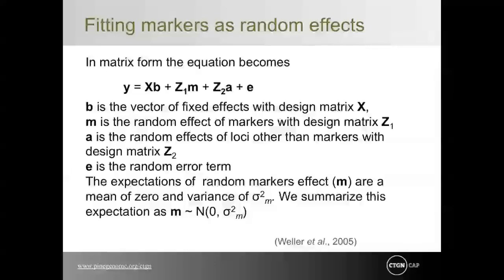We may want to fit markers as random effects. In a mixed model, we can shrink the estimate of marker effects according to the amount of data available. The less data there is to estimate M, the more the estimate will shrink towards the mean. Fitting markers as random effects regresses estimates back to zero to account for lack of information. If the choice of variance explained by markers sigma squared G is correct, the resulting estimates are BLUPs. Furthermore, treating markers as random allows calculation of percent of phenotypic variation explained by markers.